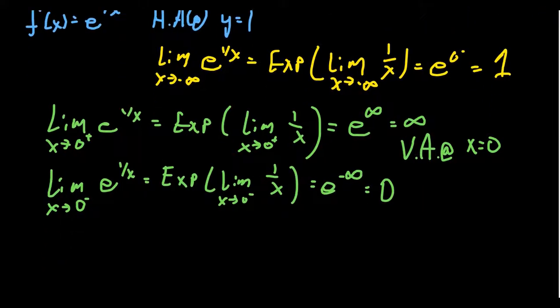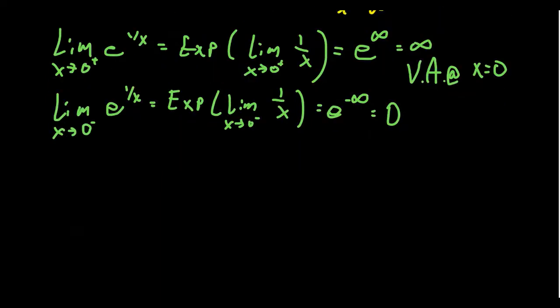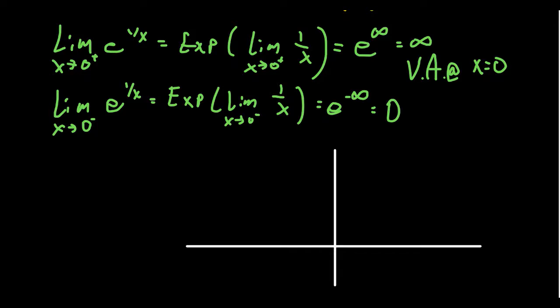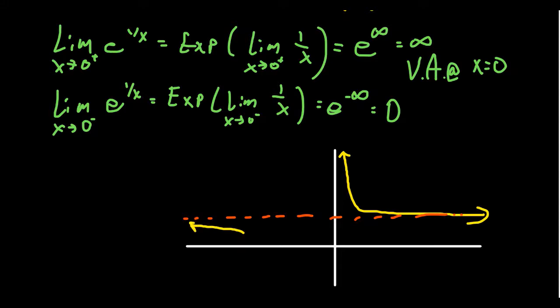This gives the function a very curious graph. On the right-hand side, the function blows off towards infinity as we approach 0 from the right, and approaches the horizontal asymptote y equals 1 as x goes to positive infinity — from above. On the left-hand side, approaching 0 from the left, the function approaches 0 itself — it is undefined at x equals 0, so there's an open point. This is an example of a function which has a vertical asymptote on one side of the graph but not the other.